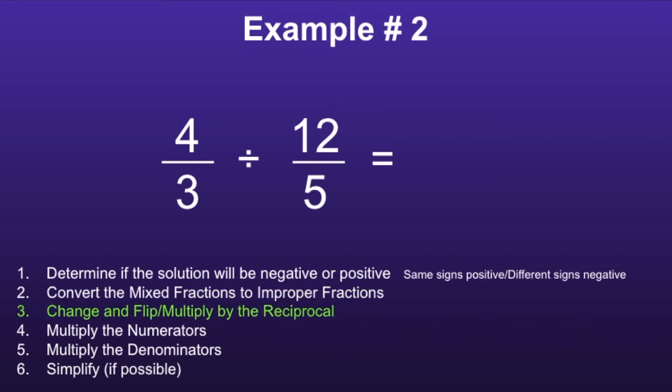Step three: change and flip or multiply by the reciprocal. How we do this is we change the division sign to a multiplication sign and then take the reciprocal of the last fraction. So the reciprocal of twelve over five would be five over twelve.